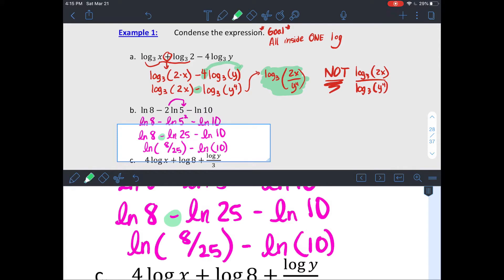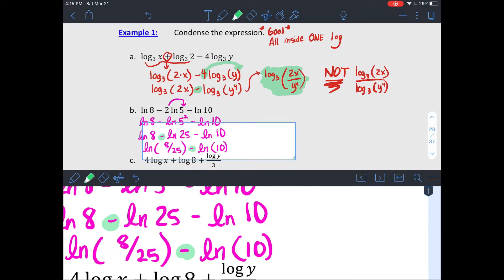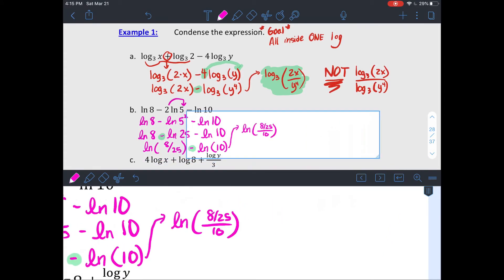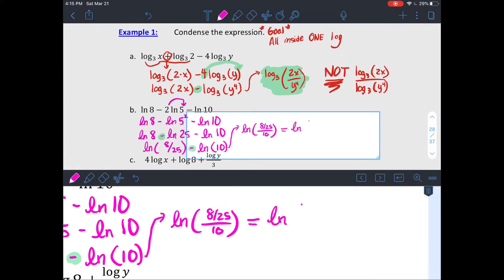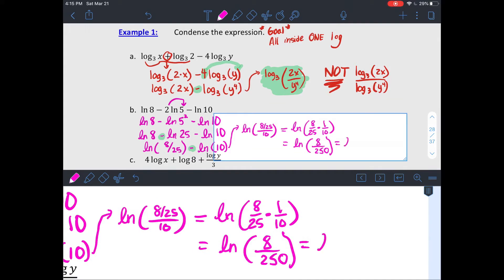I'm also subtracting a natural log of 10. So if I put those two back together, now I've got natural log of 8 over 25 divided by 10, which if you use some properties of fractions, you could multiply by your reciprocal of 1 over 10 and make that natural log of 8 over 250. And then you could reduce it to natural log of 4 over 125.